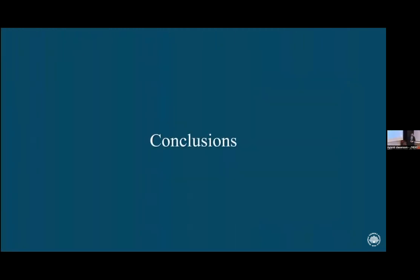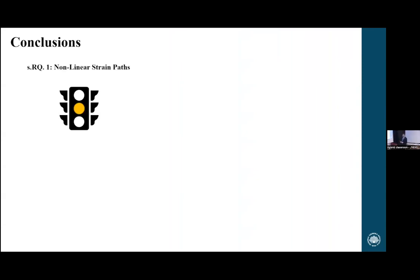Moving on to conclusions, I will address all three sub-questions individually. For the first sub-question about non-linear strain paths: I tested the transformation of the forming limit diagram to the new evaluation space. From the presented results, we can't say it works. But I wouldn't discard the hypothesis immediately, because the reason for the beta value being so far out of the theoretical space is most likely found in the 90-degree turn of the strain path. Before we understand what is happening in that 90-degree turn, we can't disregard the hypothesis — so it gets an intermediate yellow on the stoplight. It's neither a go nor a no-go.